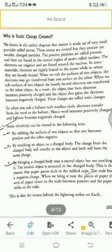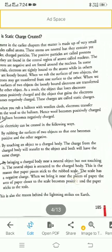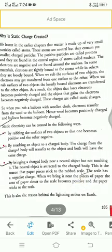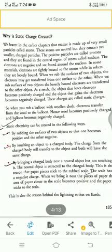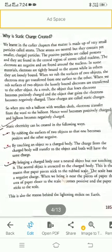Some electrons are found in certain areas and some are not. So when you rub a balloon with wool cloth, electrons transfer from the wool to the balloon. Hence, the wool becomes positively charged and the balloon becomes negatively charged.